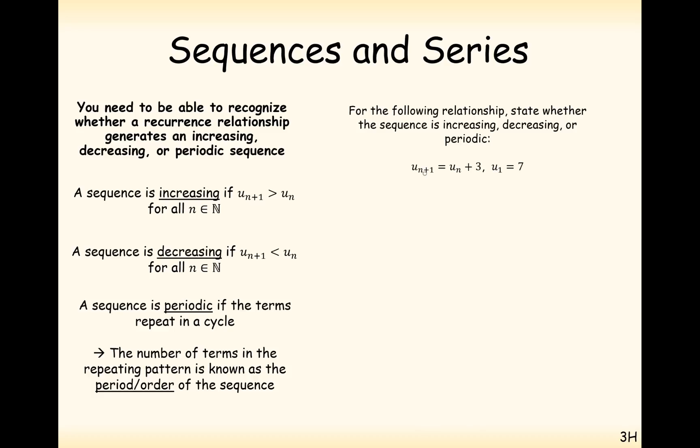So let's have a look at a few examples here. This sequence here is always going up by 3 each time. It starts at 7, so we can see here that if we were to generate the first few terms, we are obviously going to get an increasing sequence.